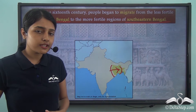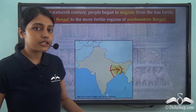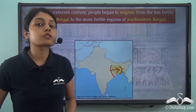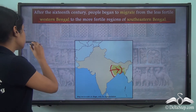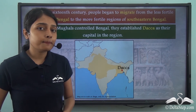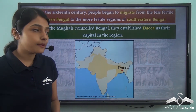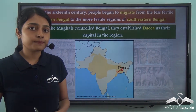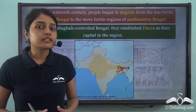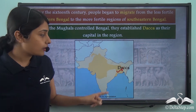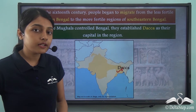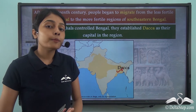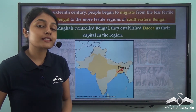Now what happened as a result of this? Most definitely when people start migrating from one place to another, the cultural aspects of those regions would also shift and evolve. When the Mughal Empire controlled Bengal, they established Dhaka as the capital of this region. From this we can understand that when Dhaka was established as the capital of Bengal under the Mughal Empire, this Southeastern part of Bengal became more prominent socio-culturally and politically.